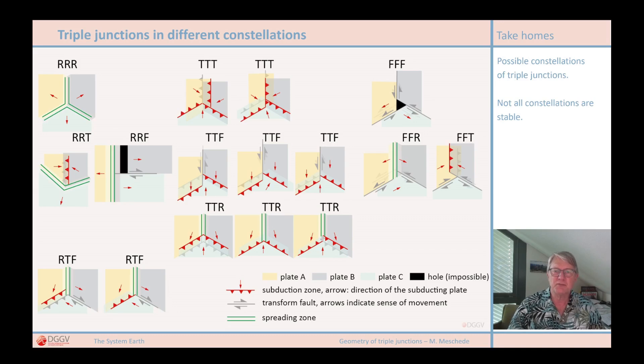The movement direction of the plates is marked by the red arrows. At some triple junctions, you can see that holes would appear, here shown in black, if you consistently move the plates in the direction of the arrows.